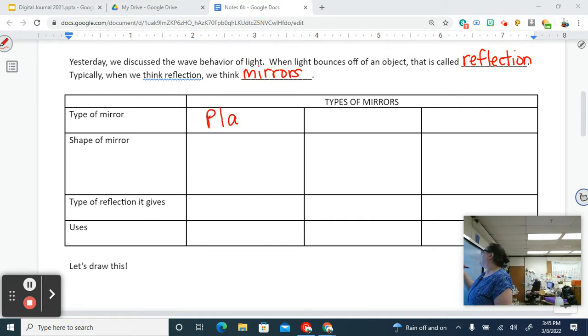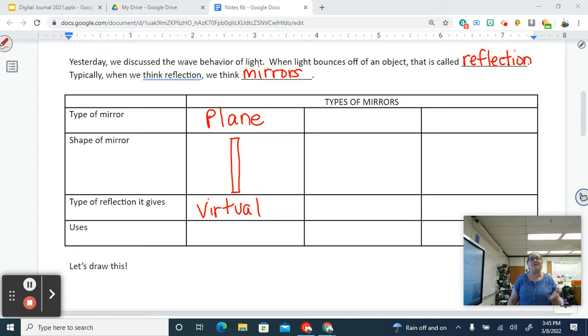The first one is called a plane mirror. And that's just a regular, everyday, flat mirror. It gives us a virtual reflection, though. It does not give us a real reflection. And we know that because you talk all the time about when you take a selfie and it looks opposite. And that's because you don't see yourself the way other people see yourself. You see it opposite. And the uses for a plane mirror are everyday uses.